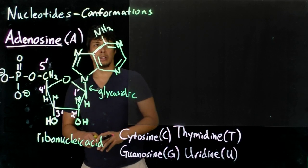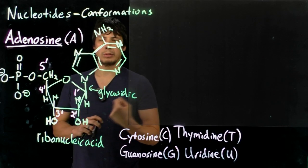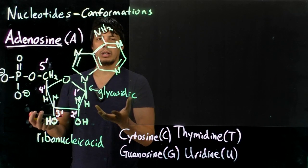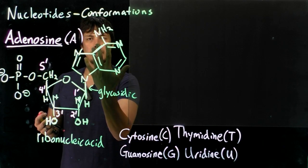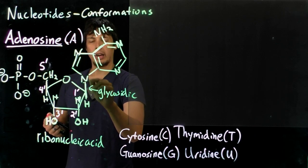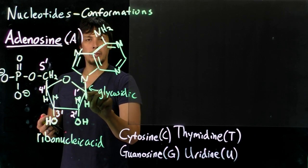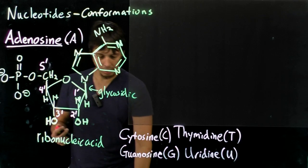Alright, so now there are different conformational changes that are available to the nucleic acid. One is that this nitrogenous base can rotate around the axis of the bond between the anomeric carbon and the nitrogen, so around the glycosidic bond.